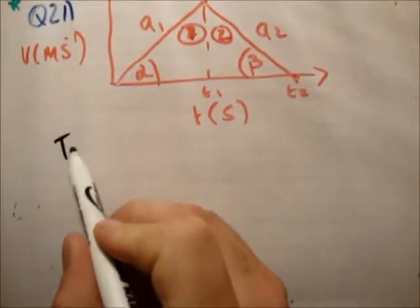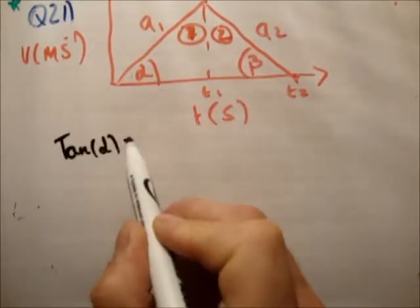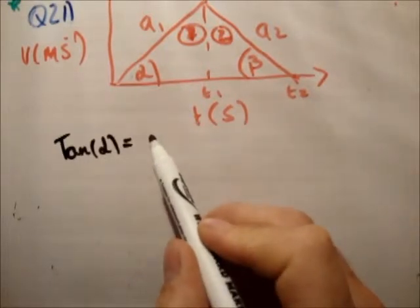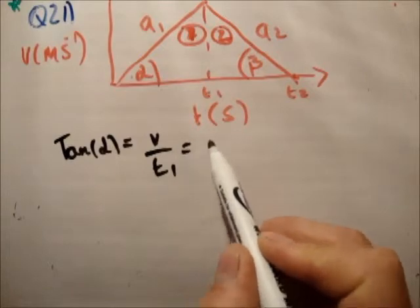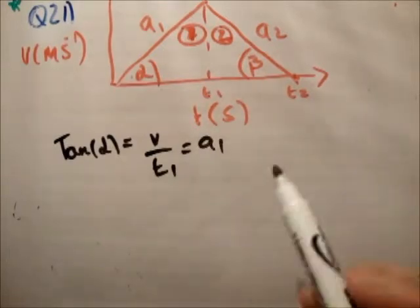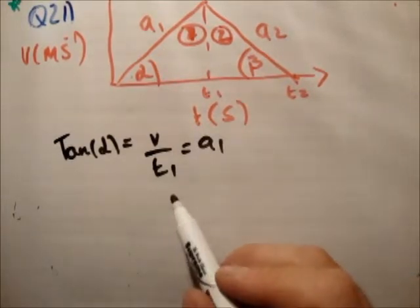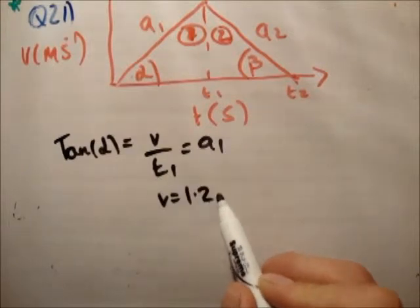Tan alpha is equal to the opposite, which is V, over the adjacent, which is T1, is equal to A1. Now we know what A1 is equal to. It's equal to 1.2. So V is equal to 1.2 times T1. That's the first thing.